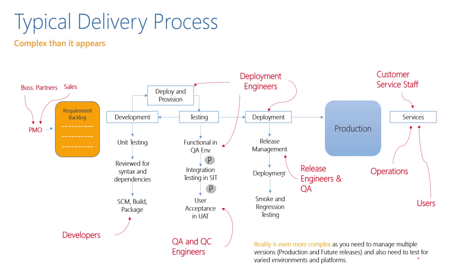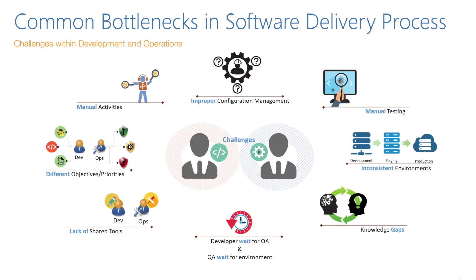Let's start with a project where we do not have DevOps — what can be the common bottlenecks in a software delivery process? If you see the frame, we have some manual activities in the project or even in our CI/CD pipeline. To automate them we need DevOps, and then we can have improper configuration management, which also needs to be corrected.